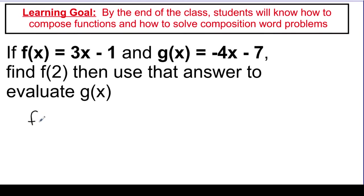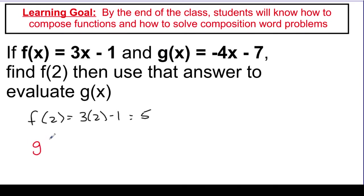So f of 2 means take a 2 and plug it into the f function, so it's going to be 3 times 2 minus 1. Well, f of 2 is equal to 6 minus 1, which is 5. Then I'm asking you to take that answer — the 5 that just came out of f — and plug that into g, so I'm really going to do g of 5. That is negative 4 times 5 minus 7, which is negative 20 minus 7, which is negative 27. So what I just did was I took the output from one evaluation step and used it to plug in and evaluate something else.